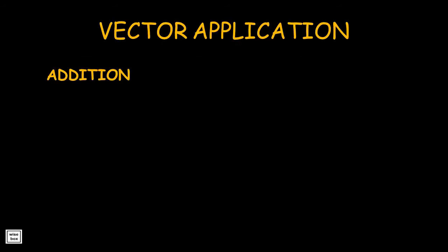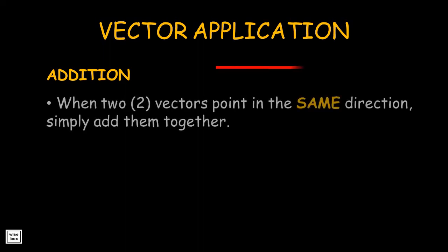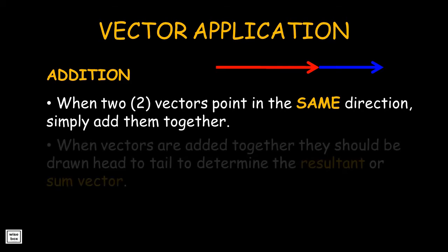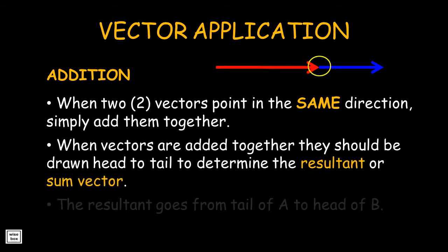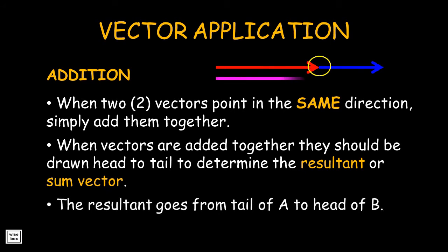Here are some rules that we can follow on application of vectors. When two vectors point in the same direction, we can simply add them together. When vectors are added together, they should be drawn head to tail to determine the resultant or sum vector. The resultant goes from the tail of A to the head of B.